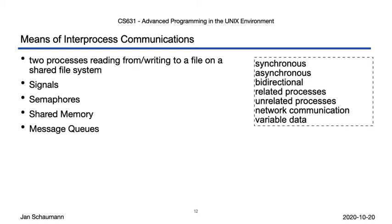The next two IPC approaches are shared memory and message queues, which both allow for asynchronous, bidirectional communications between processes on the same system, and these two approaches allow for variable data to be exchanged. Like semaphores, we'll discuss both of these means of IPC in our next video.